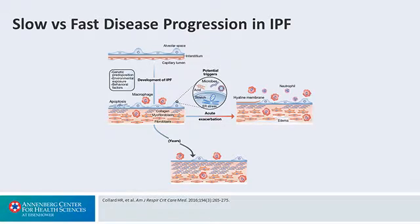What happens is that a separate and distinct pathologic process is set in place that looks like ARDS basically. You have hyaline membrane formation, patients manifest on CT and chest x-ray with diffuse alveolar infiltrates superimposed over the interstitial lung disease that characterizes IPF, and generally the prognosis after the onset of an acute exacerbation tends to be quite poor.